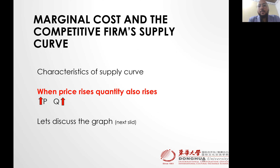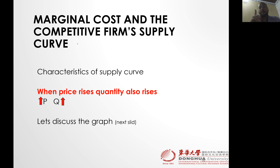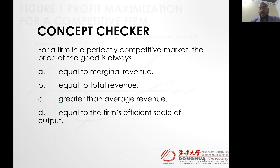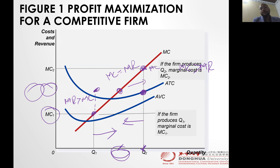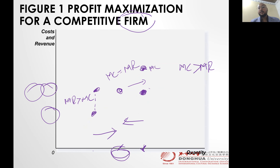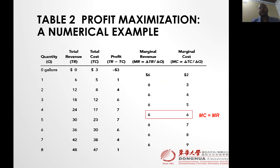Now let's talk about the firm's supply — marginal cost and the competitive firm's supply curve. Remember, we are talking about only a single firm at the moment. We covered profit maximization of a competitive firm — a single firm. Profit maximization example of a single firm.